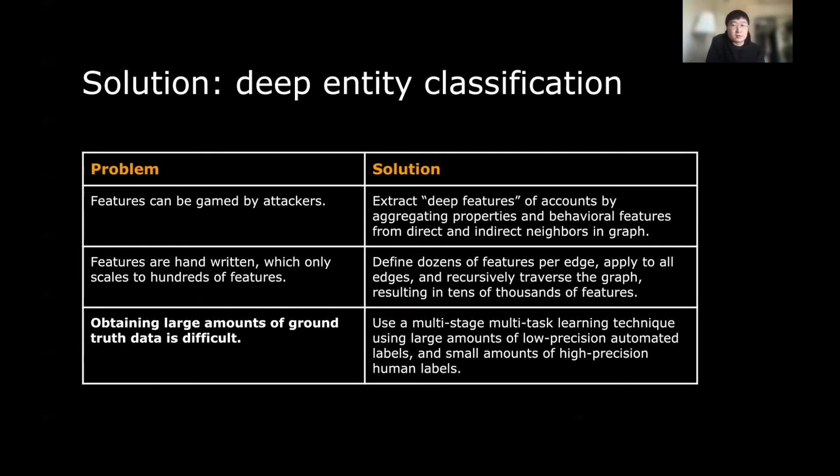Let's get started with the first challenge. The first challenge is that the features can be easily gamed by the attackers. The problem here is that, think about if you use the location feature of our account as a direct feature, it's extremely easy for them to, for example, simply change the settings of their account, or they could use a VPN to hide where they're actually coming from. So those kinds of direct features, they're easy to be gamed. The proposal from DEC is that we extract the deep features of accounts by aggregating the properties and behavior features from their neighbors and final entities.